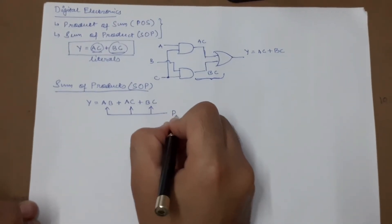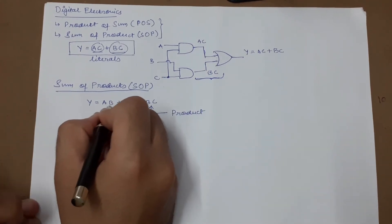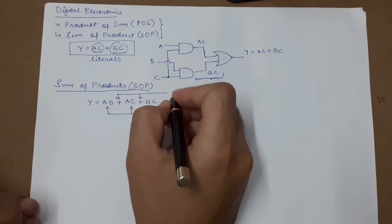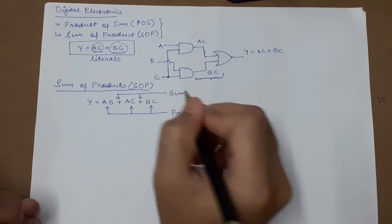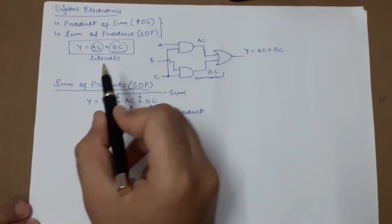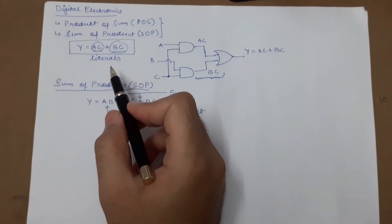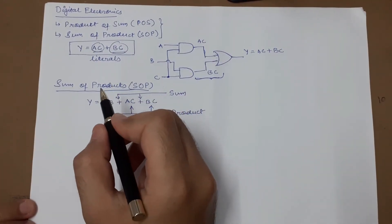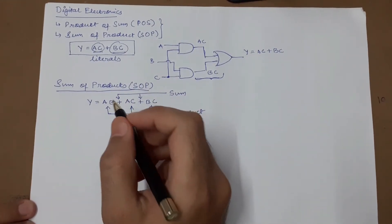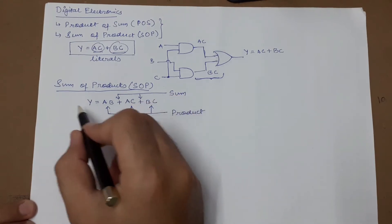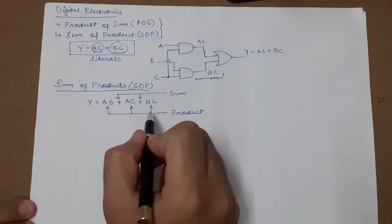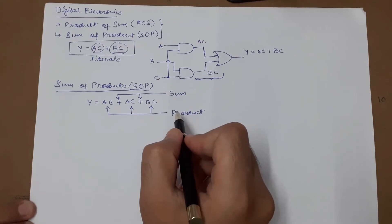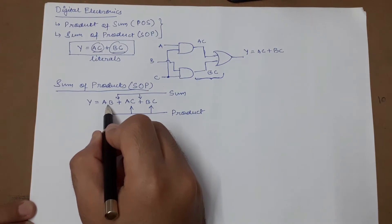These are all considered as sum of products. Therefore, such expressions are known as the sum of product form. The sums and products in the SOP form are not actual additions or multiplications — in fact, they are the OR and AND functions respectively.